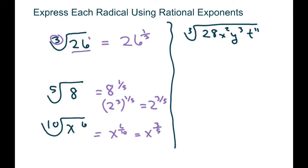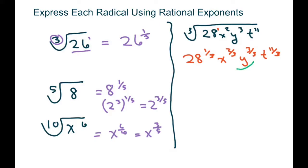On our last one, I'm going to take each piece and write it. This is 28 and this is to the 1st power, so that's 1 over 3. x to the 2 over 3, y to the 3 over 3, x to the 3, and t to the 11 over 3. The one you can simplify here is that one — 3 over 3 is just 1, and that would be your final answer.